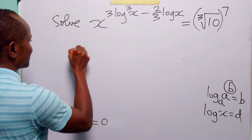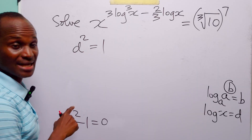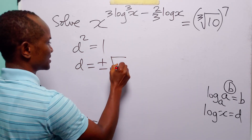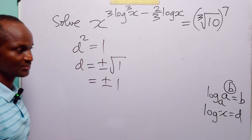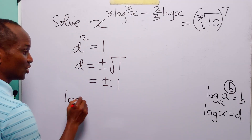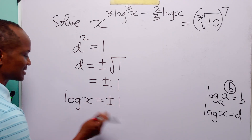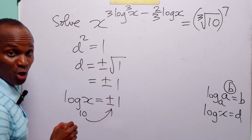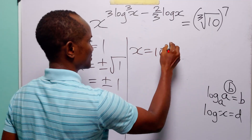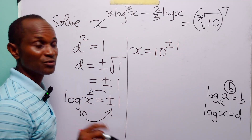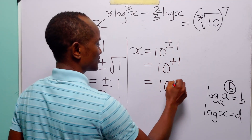From the first equation, d squared equals 1. Taking the square root of both sides, we have d equals plus or minus the square root of 1, which is plus or minus 1. So log x equals plus or minus 1, which means 10 to the power plus or minus 1 equals x. Therefore x equals 10 to the power plus 1 or x equals 10 to the power minus 1.